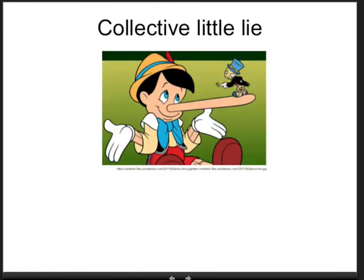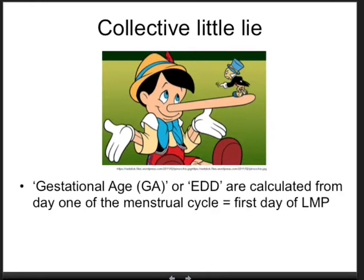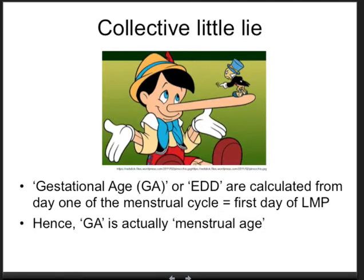We obstetricians and midwives acknowledge this is a collective little lie: we calculate the pregnancy duration from the last menstrual period, while in fact the actual duration of the pregnancy is usually 14 days less. This is for practical reasons, so please forgive us. One could argue that the gestational age is actually the menstrual age.